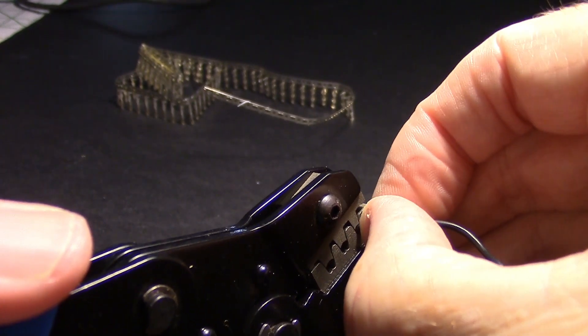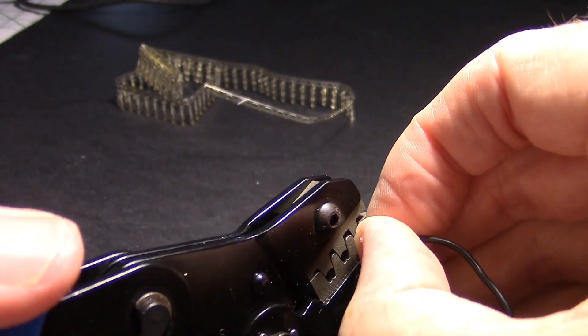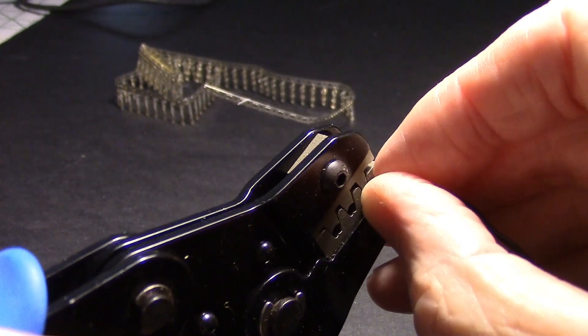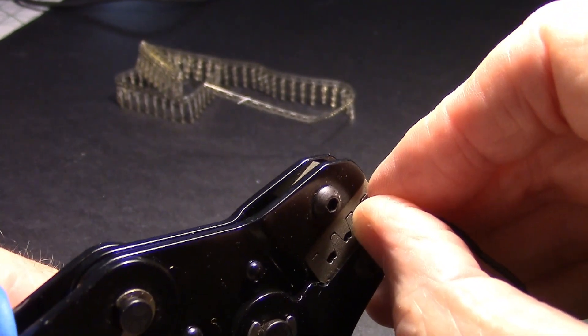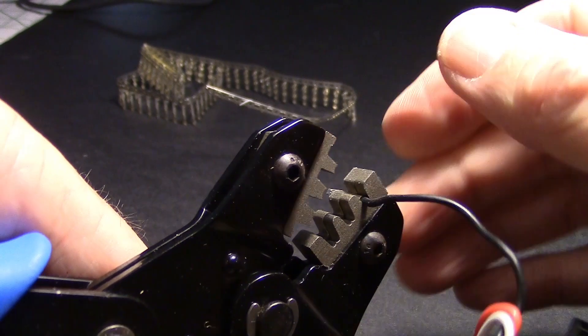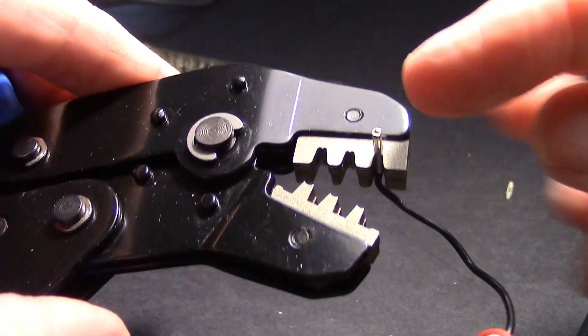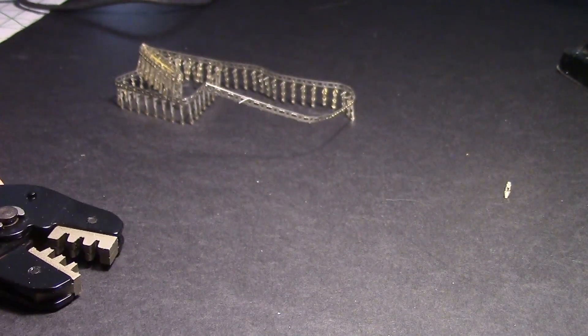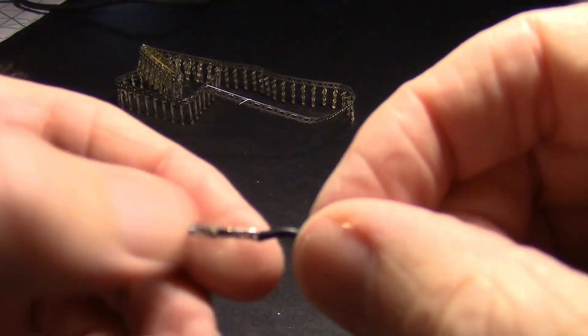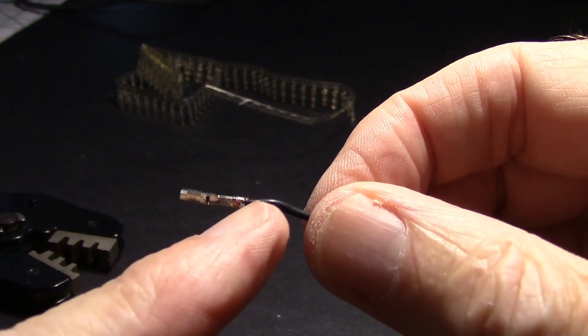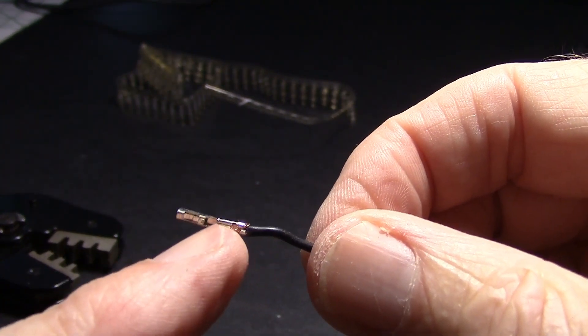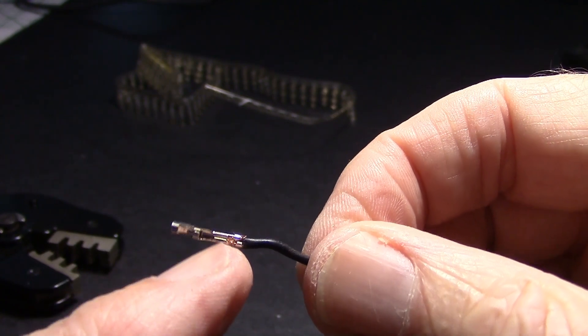We'll feed it in until we get about that much. Now let's go ahead and crimp it. Now when we let go, the self-locking thing will release. And then you can just push this to knock it loose. And that's what we have. So you can see the two longer flaps crimped the insulation and the wire, and the two smaller ones crimped just the bare wire.